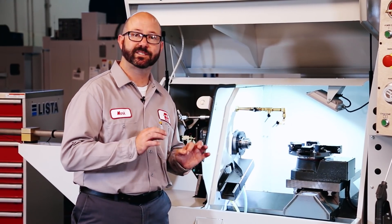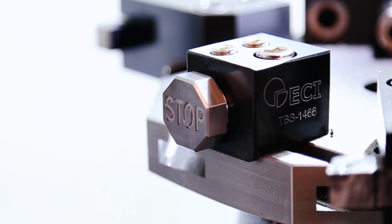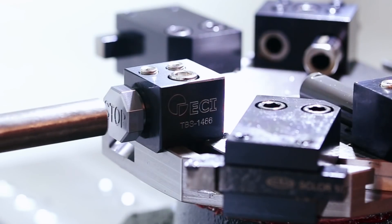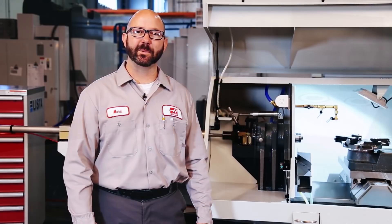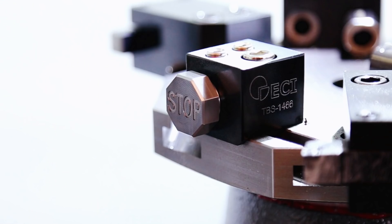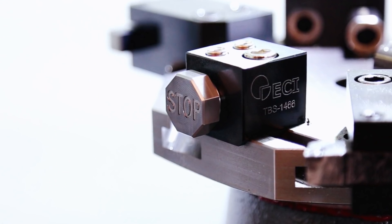With our 5C collet perfectly adjusted to hold our stock, we can go ahead and set up our stop that is mounted in our turret. This stop is going to hold our stock in place as the bar is being pushed. Now for the purposes of this video and for clarity, I've actually made my own stop that says stop.